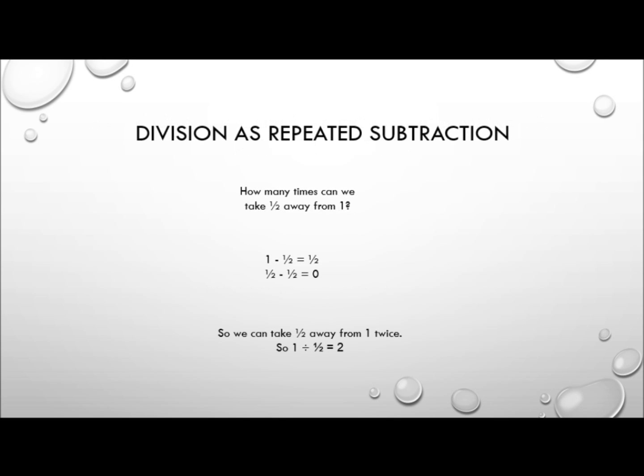So we ask ourselves, how many times can we take 1 half away from 1? Well, 1 minus 1 half is 1 half, and 1 half minus 1 half is 0. So we can take 1 half away from 1 twice. So yes, 1 divided by 1 half really is 2. We're not making the number bigger, it's just because we're dividing by something that's small, that means we can take a smaller quantity away more often.